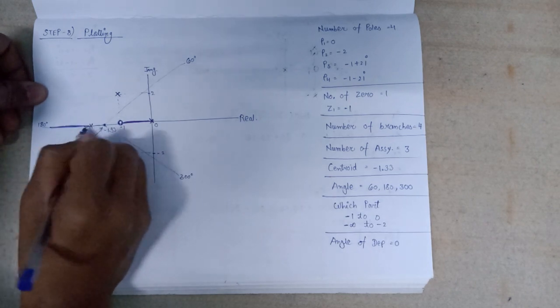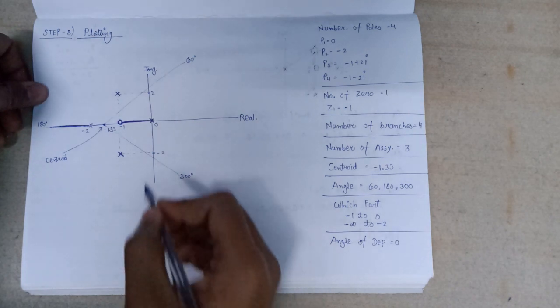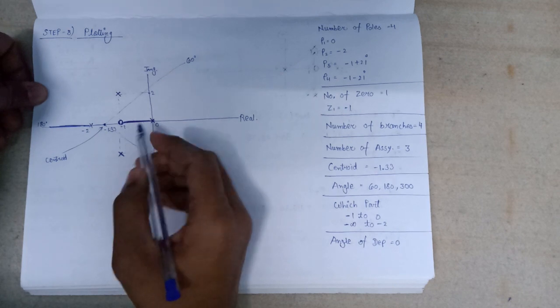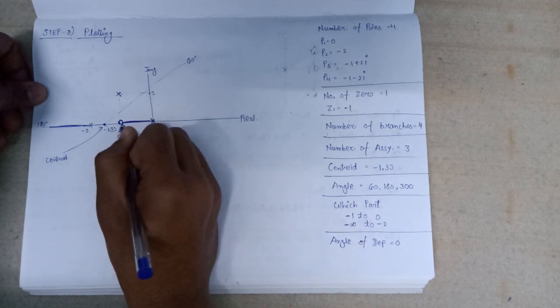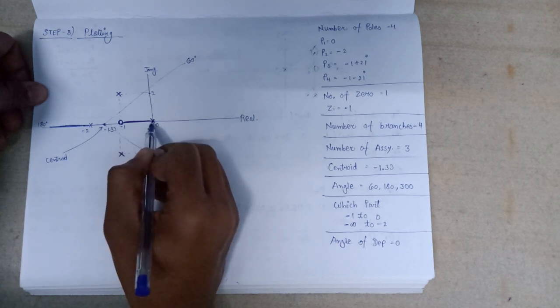Since we have studied that the branch of the root locus will emerge from the pole and go to the zero, that's why here the pole and the zeros are nearby to each other. That's why one branch of root locus will emerge from this pole.